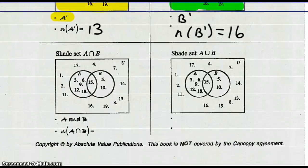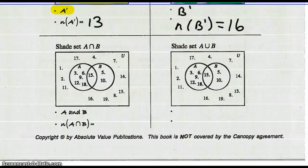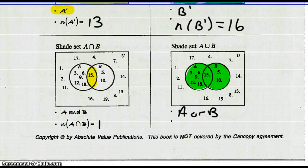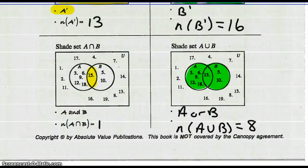Let's look at shading A intersect B — A intersect B, which is A and B, is right here. How many elements are in A intersect B? One element — number fifteen; there's one element there. Shade set A union B — so everything in the two circles, A or B. That's how we write it: A or B. Number of elements in A union B would be six plus two, which is eight.